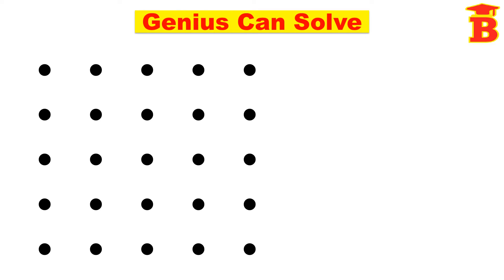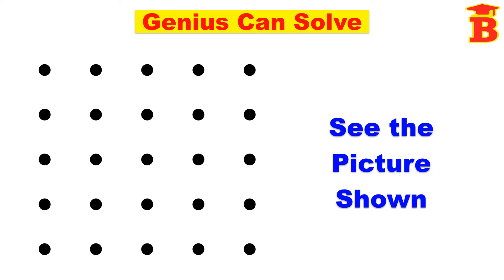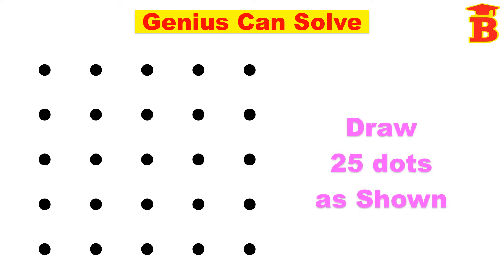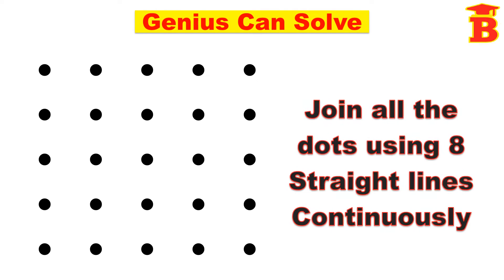Welcome to our channel Bright Mass. See the picture shown here. Draw 25 dots as shown in this picture. Now the question is that we have to join all the 25 dots using 8 straight lines continuously. Note that the lines must be continuous.